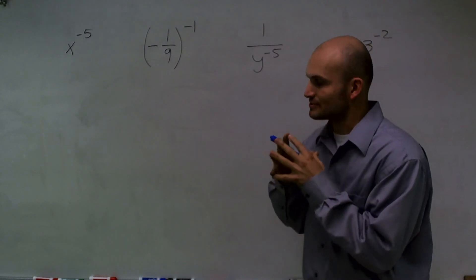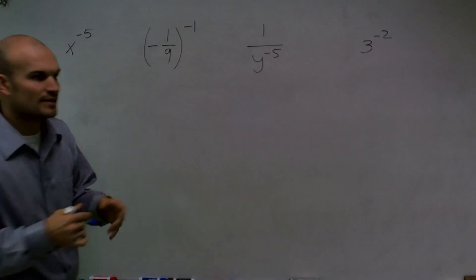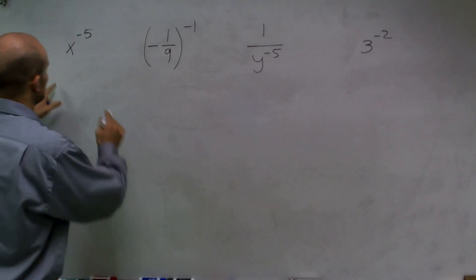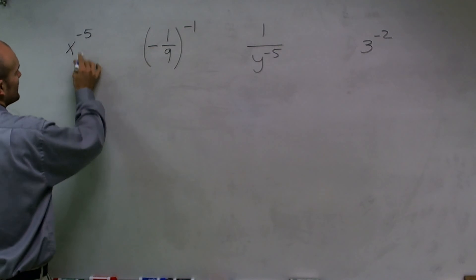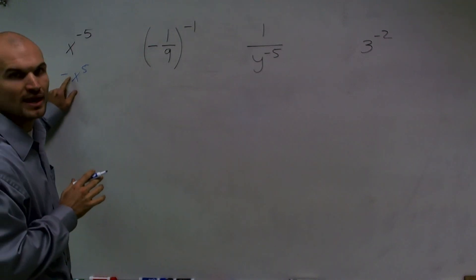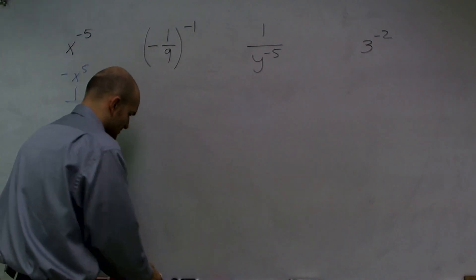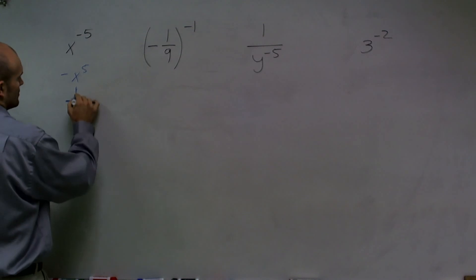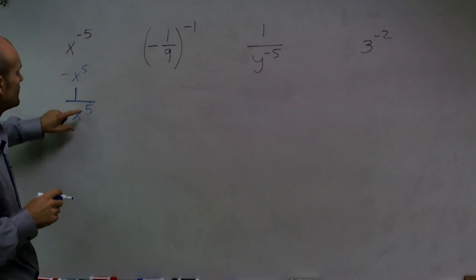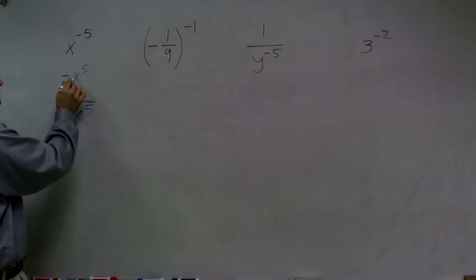Let's talk about big misconceptions students have. A lot of students don't understand the negative in a negative exponent. Remember, all the negative does is allow us to use the addition property of exponents. A common mistake is thinking x to the negative 5th is the same as x to the 5th — it's not. The negative is not changing the value of x; it tells us to rewrite the number in the denominator with a positive exponent.